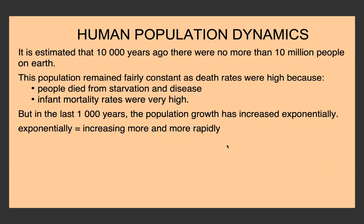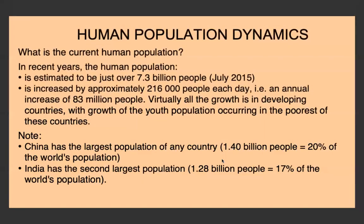Exponential means increasing more and more rapidly. The current human population is estimated to be just over 7.3 billion people. It increases by approximately 200,000 people per day, so every year 83 million people.